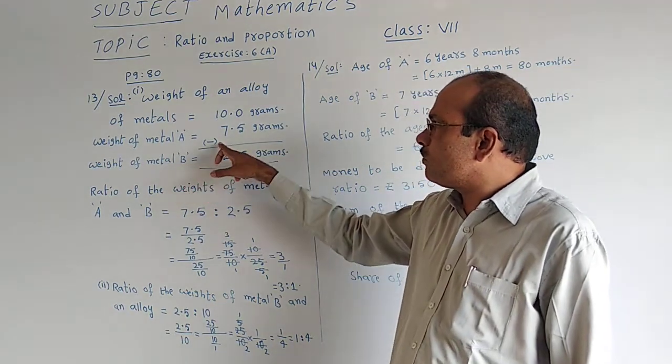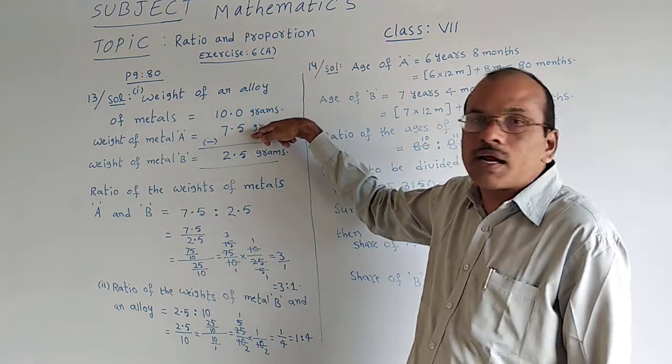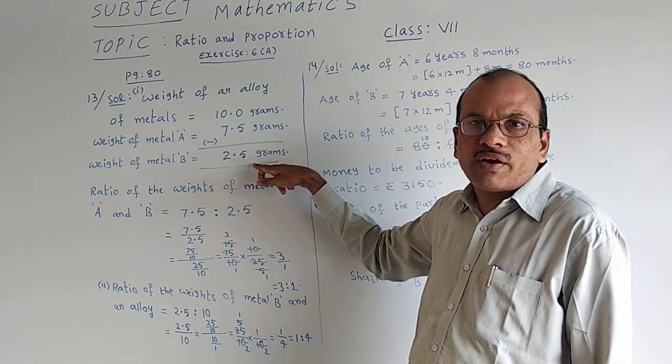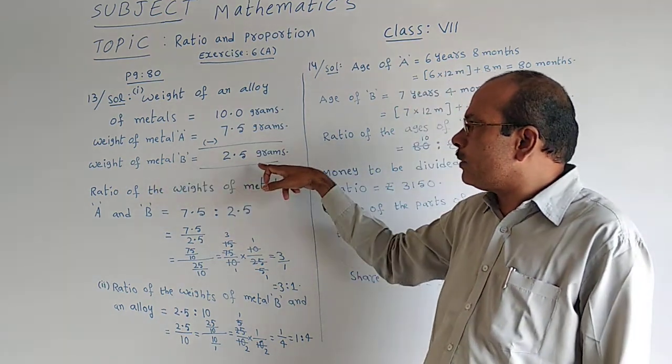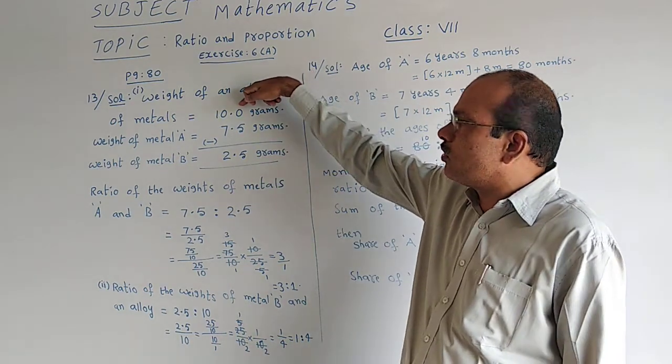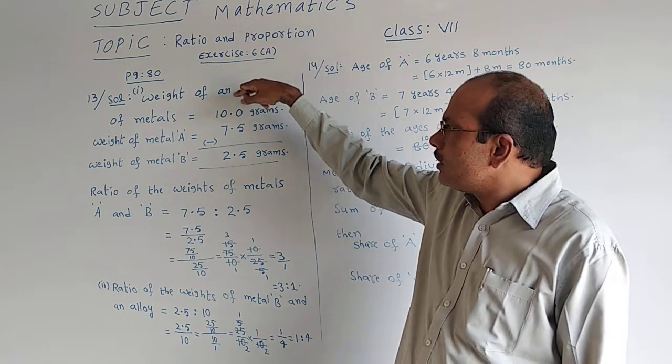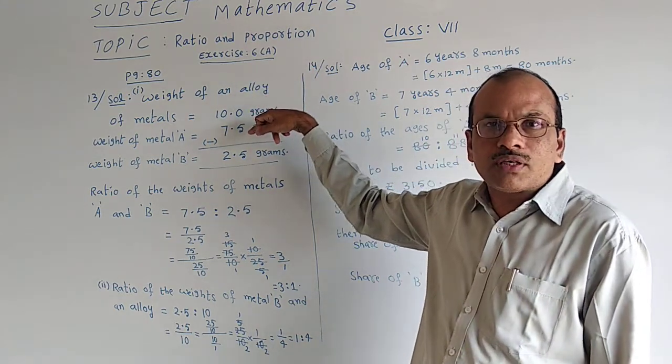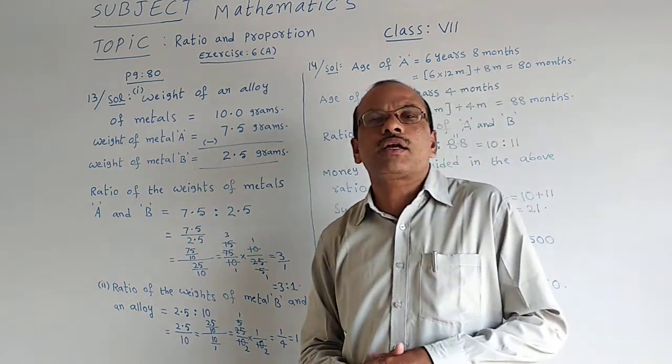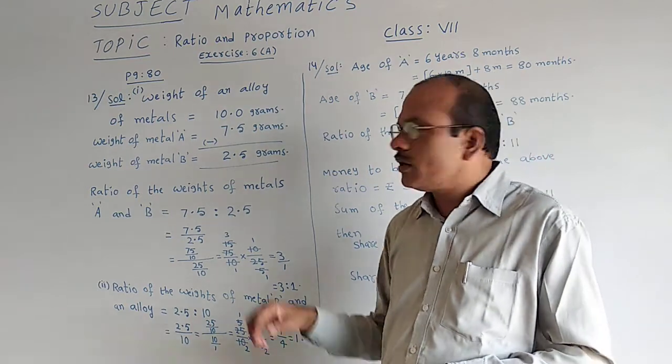Metal B weight with subtraction we will get. From 10, we have to subtract 7.5. Then the subtraction gives you 2.5. That is weight of metal B, 2.5 grams. Because the total weight of both the metals called alloy is 10 grams. In that 7.5 grams is metal A, so remaining is 2.5 - the weight of metal B.